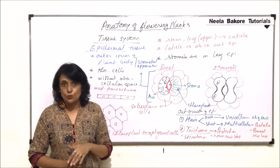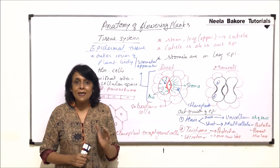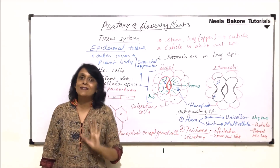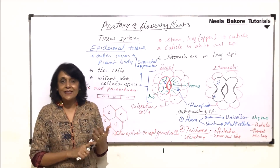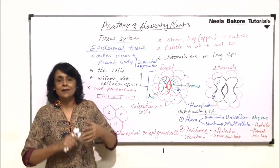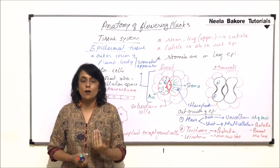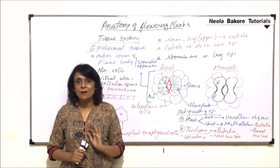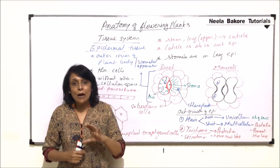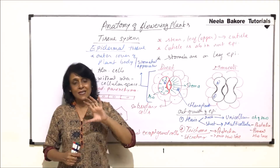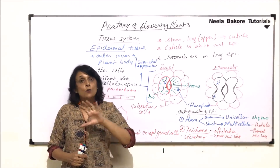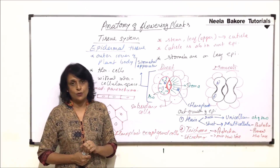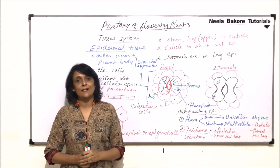The next tissue system is the ground tissue system, which basically means everything between the epidermis and vascular tissue. In ground tissue there is parenchyma, collenchyma, and sclerenchyma. The arrangement is different in different organs — stem, root, and leaf each have different arrangements. Every cell — parenchyma, collenchyma, or sclerenchyma — that fills this space is called ground tissue. The next tissue system is the vascular tissue system, which we will start in the next video.